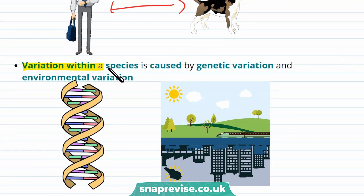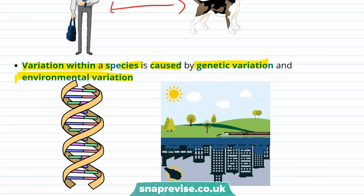The variation within a species is caused by genetic variation as well as environmental variation. This means that what you look like depends on your genes as well as what's around you and where you live. It can also cause differences in your behaviour and your physiology.